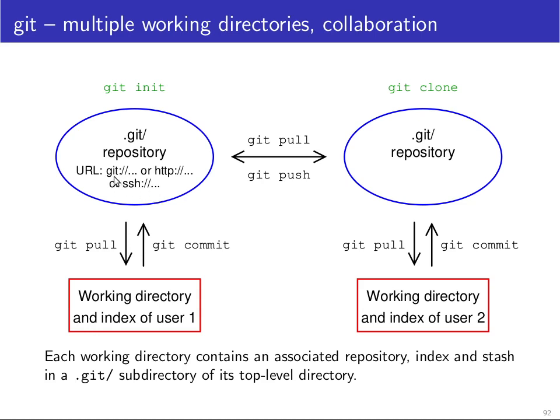There are different URL schemes and protocols supported. You can refer to a repository just as a path name, or you can run a git server process that speaks the git protocol. There is also a way of publishing a git repository as a set of static files on a website, which you can then access using the HTTP scheme. Or, similar to subversion, you can tunnel the git protocol over SSH, which is one of the most common ways if you have easy SSH connectivity to a repository on another computer.